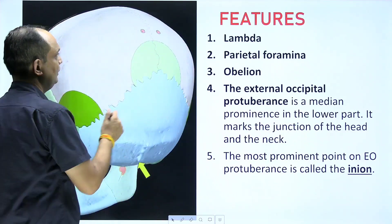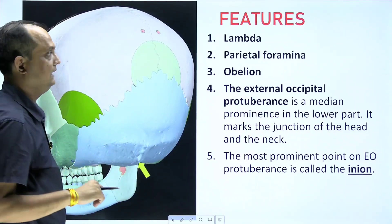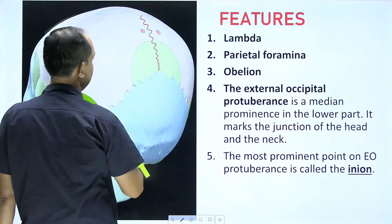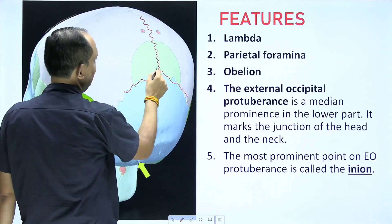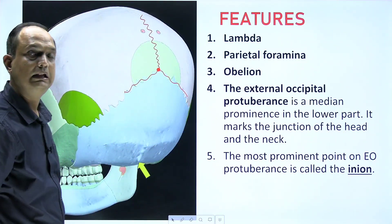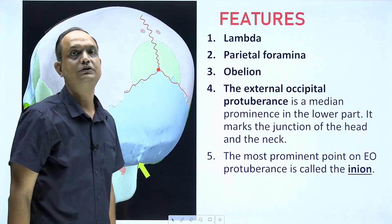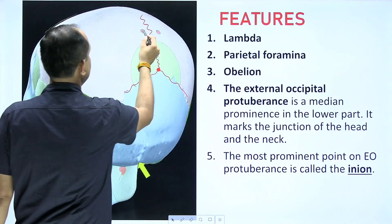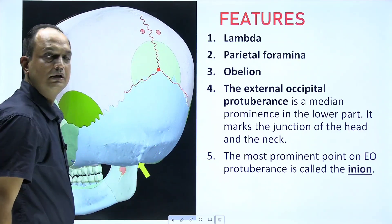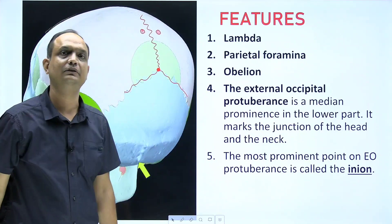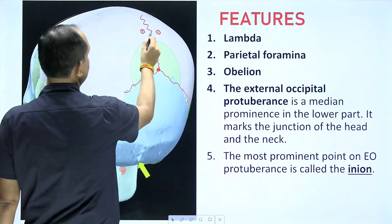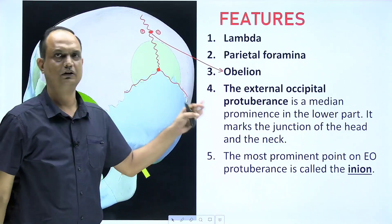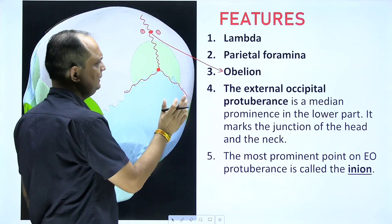The first feature visible in norma occipitalis is lambda — the intersection at the posterior end of the sagittal suture and lambdoid suture. At this point you will have the posterior fontanelle in intrauterine life, which ossifies by two to three months after birth. You also have a pair of parietal foramina on both sides of the sagittal suture, which allow passage of an emissary vein. The center point of the two parietal foramina is known as obelion.